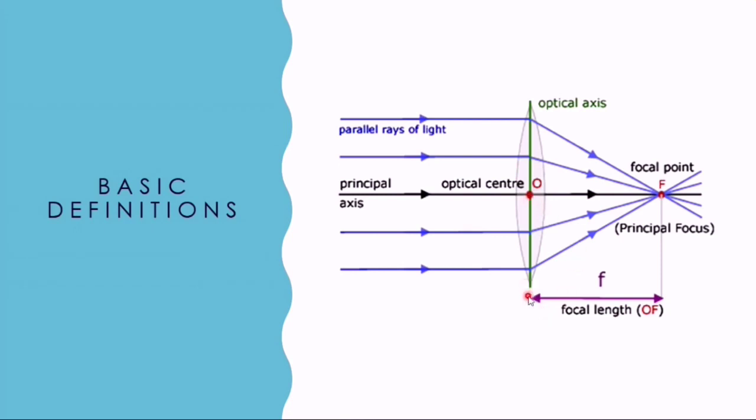Focal length is the horizontal distance between the principal focus and optical center. The optical center is an imaginary point inside a lens through which a light ray is able to travel without being deviated.